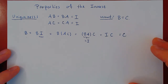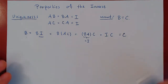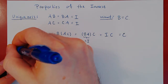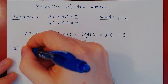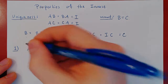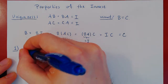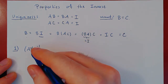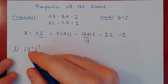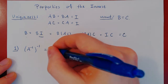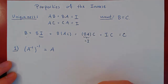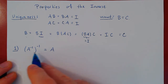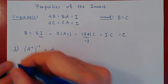What other properties does the inverse possess? If you look at the inverse of A and ask what is the inverse of this matrix — well, if you invert the inverse of A, you will get A back. This looks intuitive, but we'll still have to prove it.